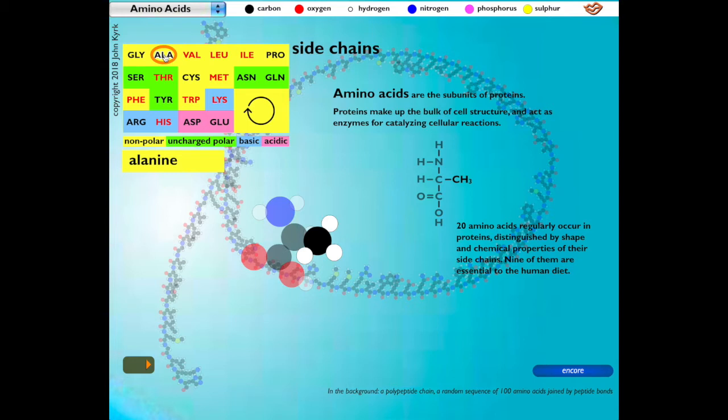While there are many amino acids, only 20 amino acids regularly occur in proteins, distinguished by shape and chemical properties of their side chains. Note the change to the distinguishing group attached by its beta carbon, or nitrogen, to the alpha carbon in the amino complex.